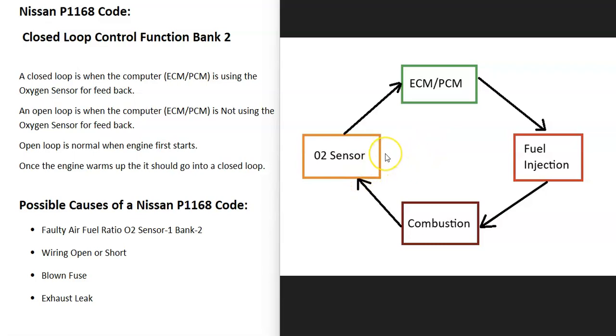But once the engine warms up and this O2 sensor is reading the oxygen levels that's burnt off during combustion, it should be reporting this back to the computer. And when it does report this information back to the computer, the computer is going to know the exact air-fuel ratio mixture that should be going into the cylinder.